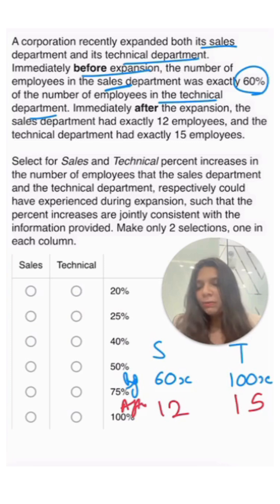Select for sales and technical the percentage increase in the number of employees that the sales department and the technical department respectively could have experienced during expansion, such that they are jointly consistent with the information provided.